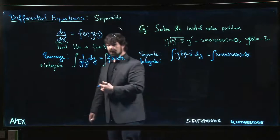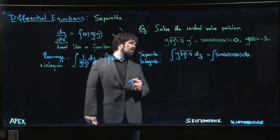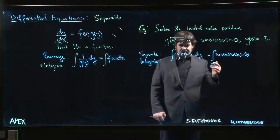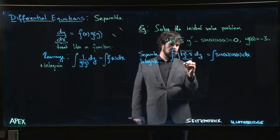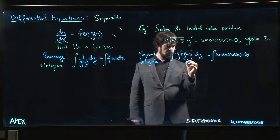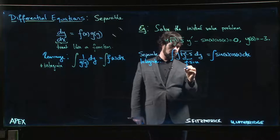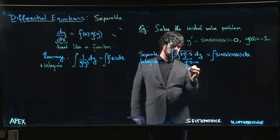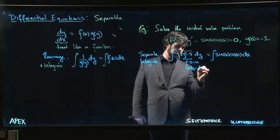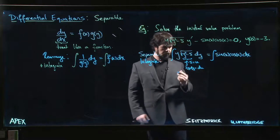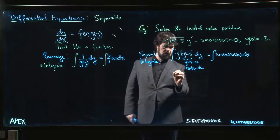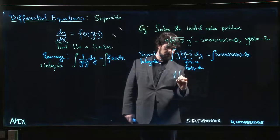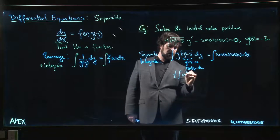But remember that the very first thing you should always look for is can you just do a u substitution? And sure you can, let this be your u. And then 2y dy would be du. So on the left hand side we're going to get one half times the integral of u to the one half du. The one half comes from here.